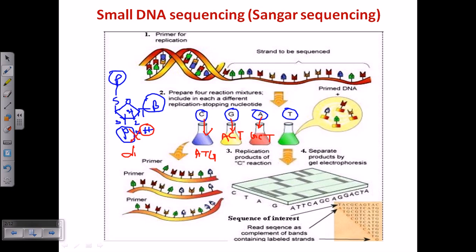We carry out the experiment by providing the DNA strand to be synthesized in each vial along with one modified base and three normal types of bases. We then allow them to polymerize so all nucleotide sequences are polymerized together to form a chain. The important property of dideoxy bases is that they terminate elongation or the polymerization process.